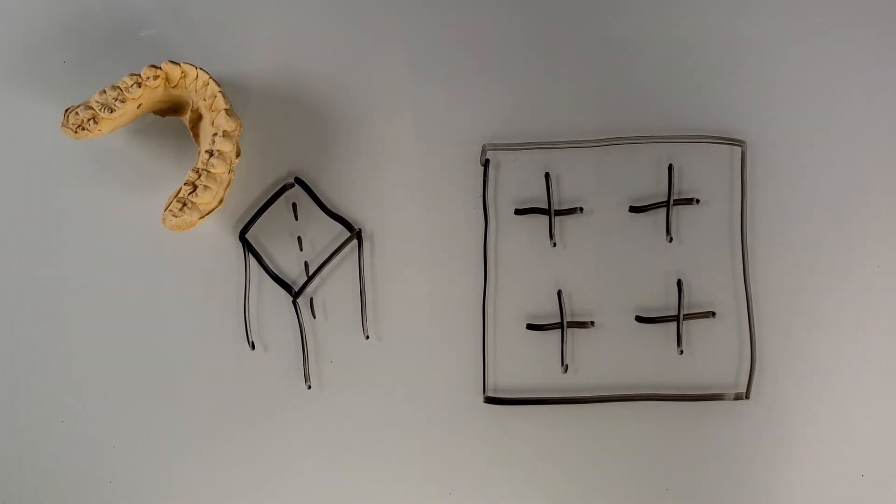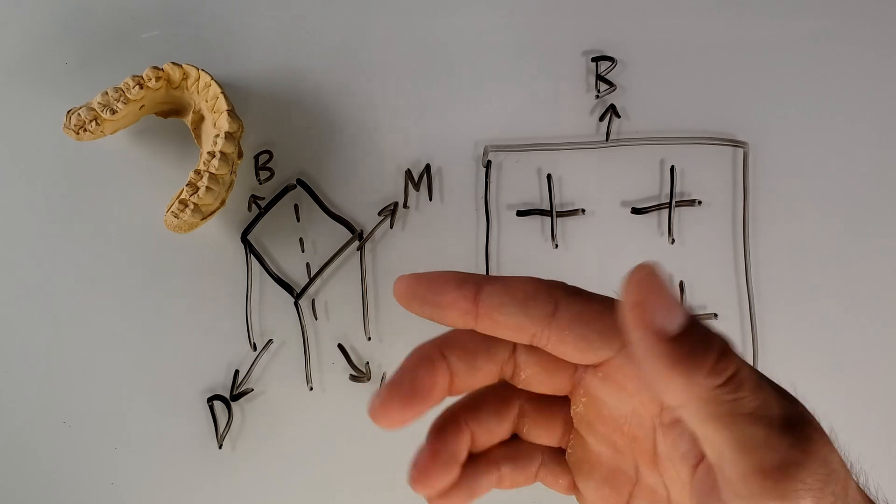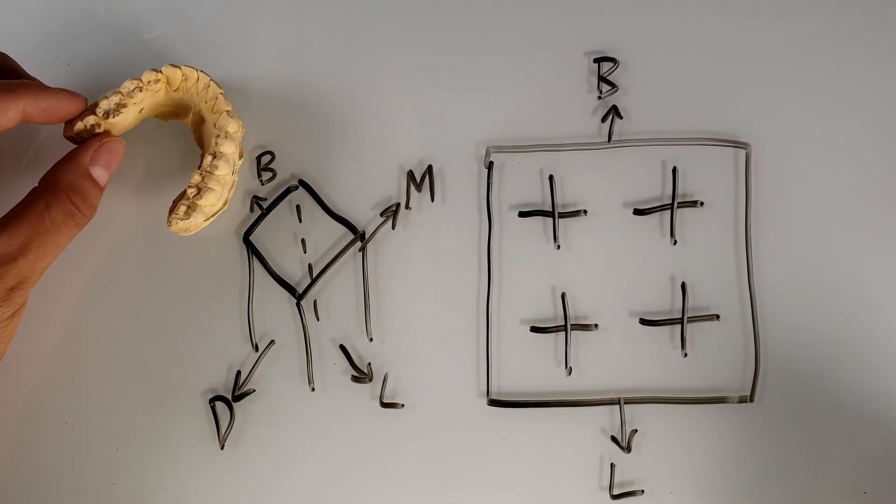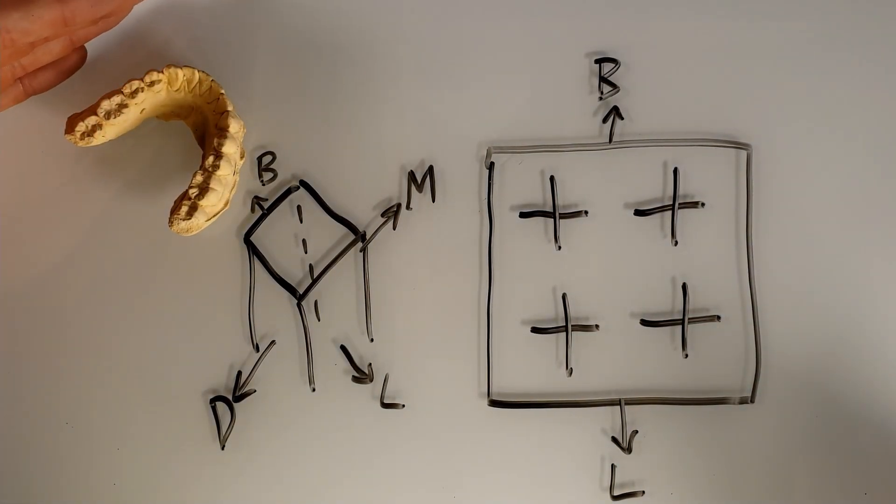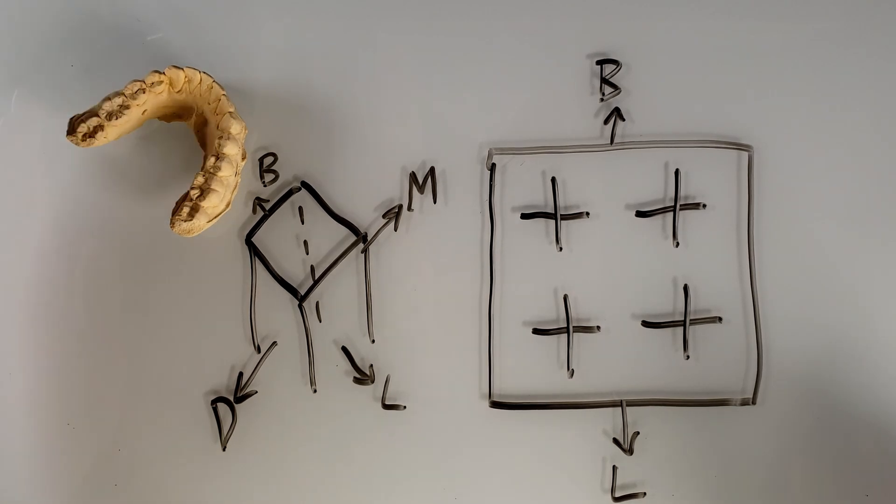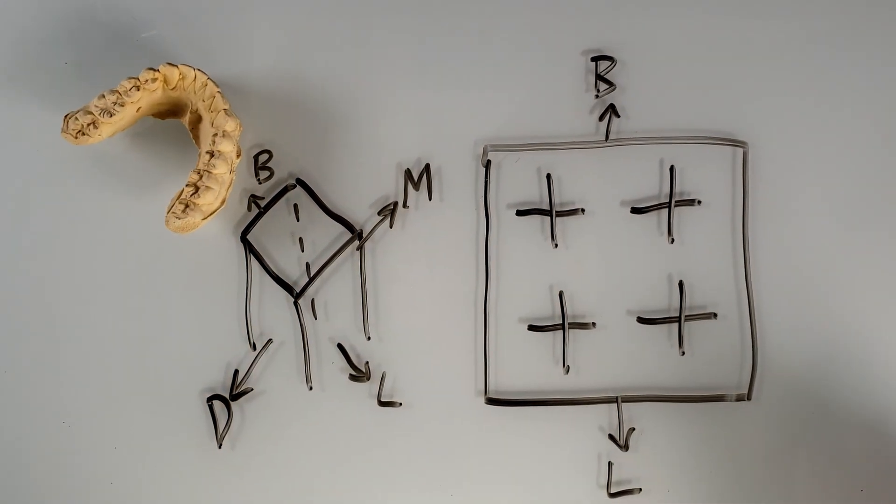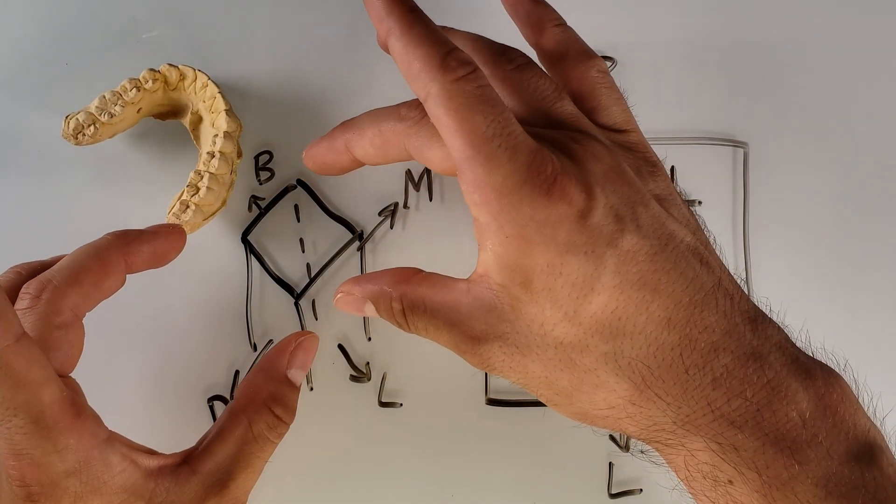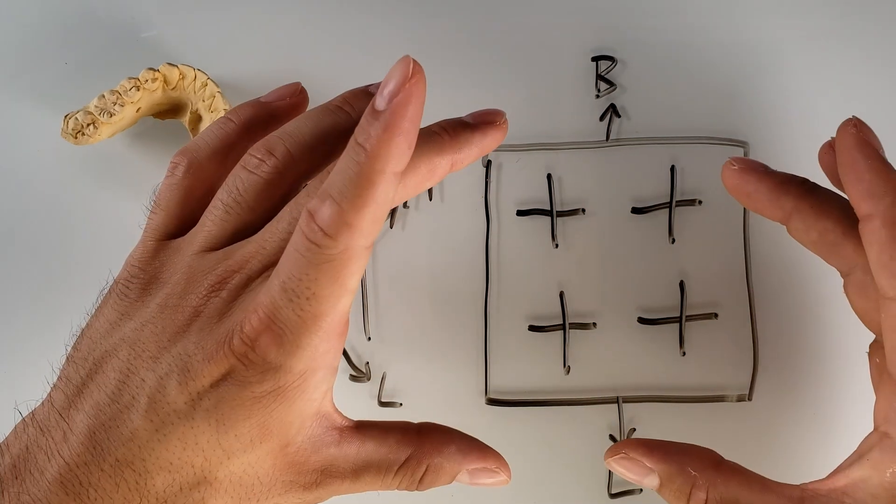Now let's label our directional terms. All right, so let's talk about the cube first. So again, we're doing this tooth right here. So again, this is where your cheek's going to be. So that's the buccal. This is where your tongue's going to be, lingual. And then we have distal and mesial. So now if we just rotate this occlusal view like this, this is the overhead view.